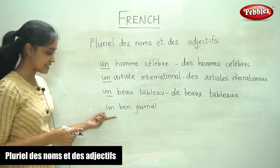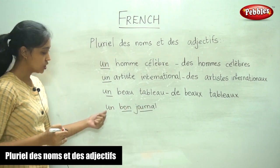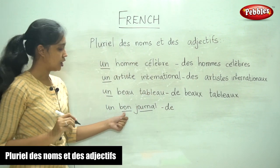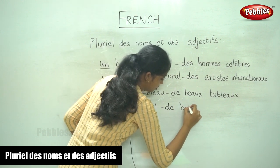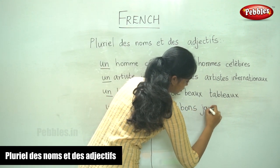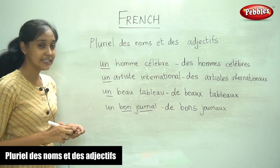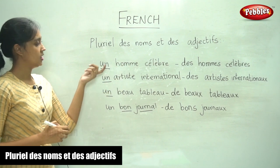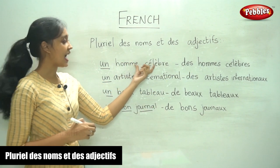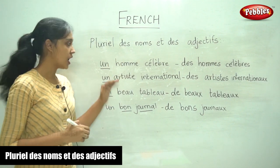And finally in the last example, again the adjective comes first followed by the noun. So 'un' becomes 'de', 'bon' becomes plural as 'bons', and 'journal' — the plural is 'journaux'. So this is how we write the plural form of a phrase in French: we replace the article with the plural form, and the adjective and the noun with their respective plural forms. I hope you understood this concept.